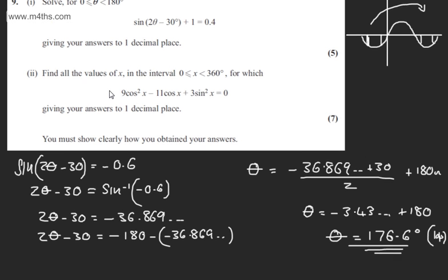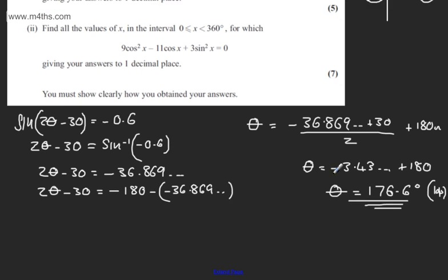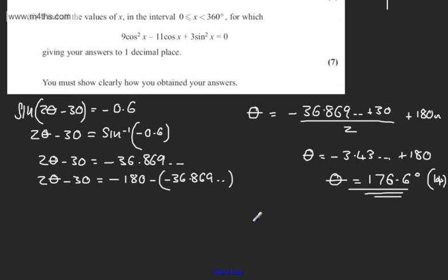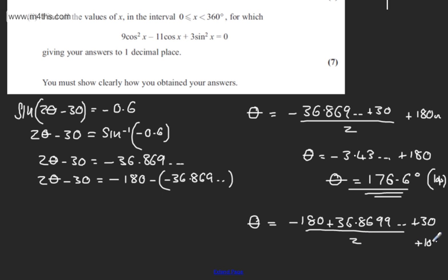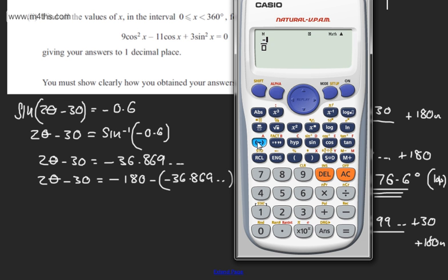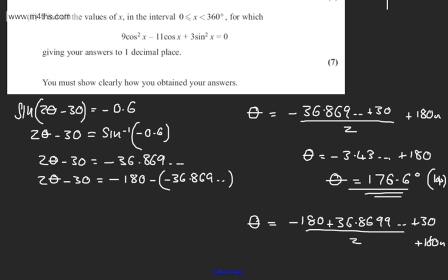There will be no other solutions from this branch in the interval, as adding another 180 would take us outside. Now let's deal with the second equation. Theta will be equal to minus 180 plus 36.869 plus 30 degrees, all divided by 2, plus multiples of 180 degrees. Putting this into the calculator: minus 180, subtract the stored answer, add 30, divide by 2 — that gives minus 56.56.